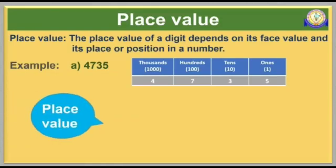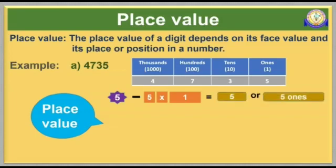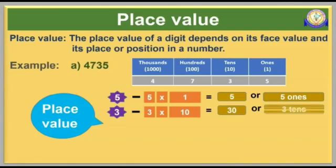Now let us find the place value of each digit. Here, 5 is in the 1's place. The face value of 5 is 5 and the value of the 1's place is 1. Therefore, the place value of 5 is 5 × 1 = 5. The digit 3 is in the 10's place. The face value of digit 3 is 3 and the value of the 10's place is 10. Therefore, the place value of 3 is 3 × 10 = 30.